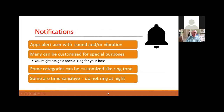Notifications: the phone gives you a notification when certain things occur, using both sound and vibration. Some can be customized for special purposes — for example, you can customize the sound for certain phone numbers. If your boss calls, you can have it play a certain tune to indicate it's your boss. Categories like the ringtone can also be time-sensitive so they will not ring at night.